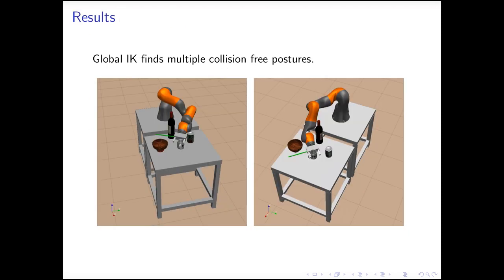We apply our algorithm on a 7-DOF robot arm to find collision-free postures, such that the arm can grasp the mark on the cluttered table. Since we solve the IK problem globally, our approach finds multiple collision-free postures, instead of a single one.